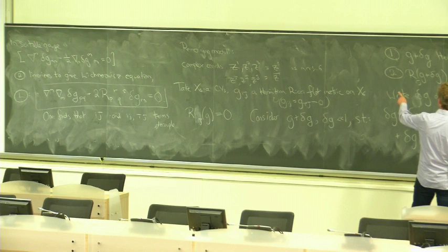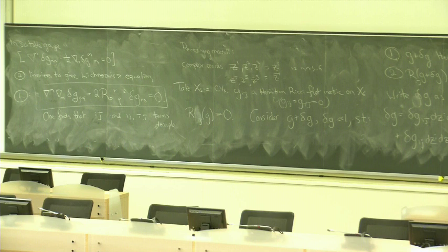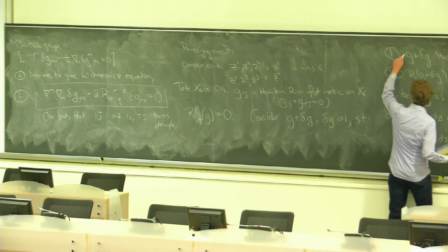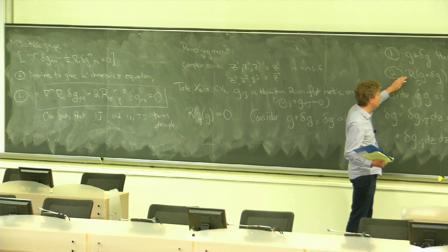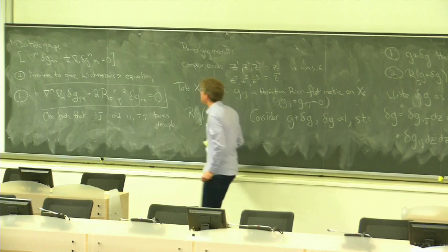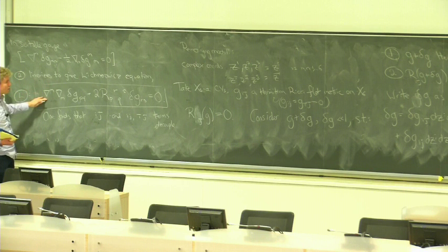The second thing that was confusing to a number of you is I imposed these two conditions, one and two, and it looks like my ansatz for delta G is manifestly incompatible with condition one, because I made this thing non-Hermitian. Let's just defer condition one for a moment. Let's imagine I just try to find deformations of the metric such that the Ricci tensor remains zero, parameterize them in this way, then linearize the condition that Ricci equals zero, and find the Lichnerowicz equation.